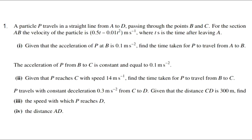The acceleration of P from B to C is constant at 0.1 m/s². Given that P reaches C with speed 14 m/s, find the time taken for P to travel from B to C. P travels with constant deceleration 0.3 m/s² from C to D. Given that the distance CD is 300 meters, find the speed with which P reaches D and the distance AD.